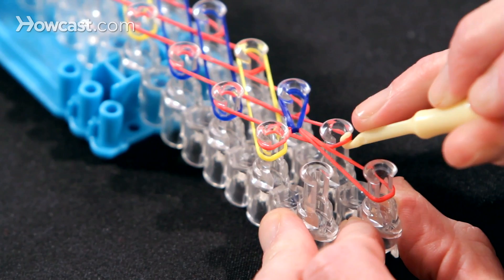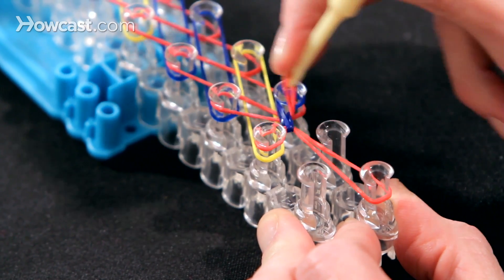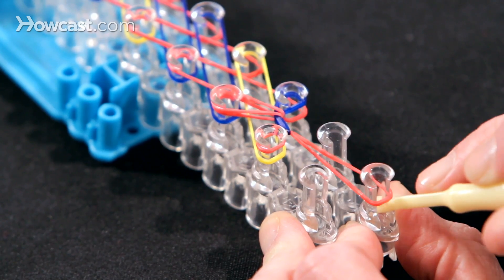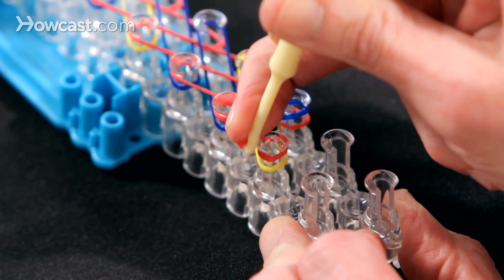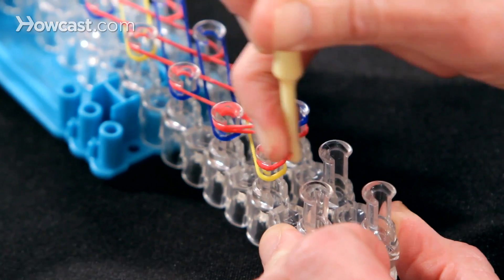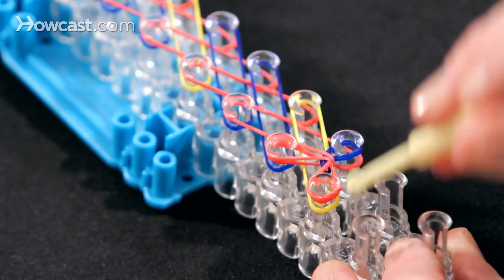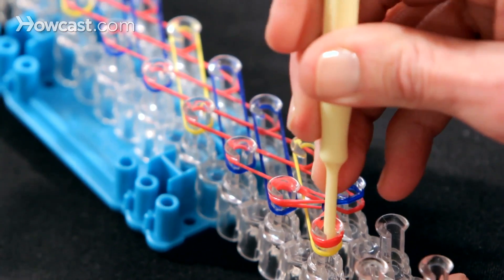The first thing we want to do is we're going to hook the blue over to the blue. Then I'm going to grab this red and I'm going to hook it to the red. And I'm actually going to hook this red to this one as well. Okay, now I'm going to do yellow. Go in behind the red,